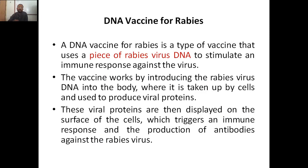A specific example is the DNA vaccine for rabies, which historically has been a major concern. This vaccine uses a piece of the rabies virus DNA to stimulate the immune response. It works by introducing the rabies virus DNA into the body, where it is taken up by cells and presented on the cell surface, triggering the immune system to produce antibodies that fight and kill the rabies virus.